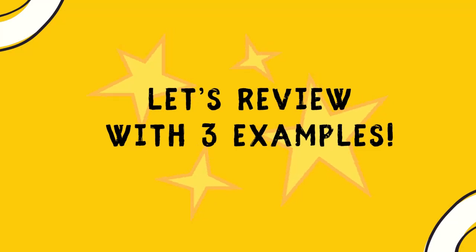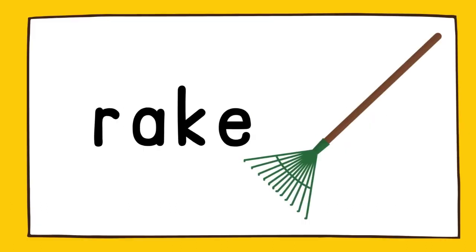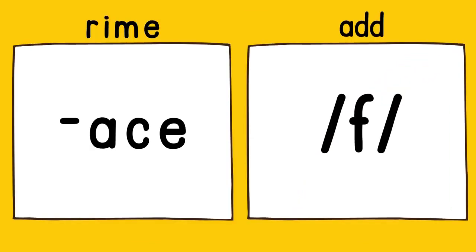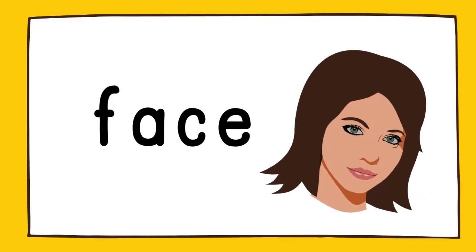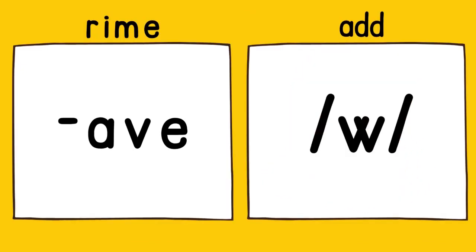Let's review with three examples. The rhyme is ache, add r. Rake. The rhyme is ace, add f. Face. The rhyme is ave, add w. Wave.